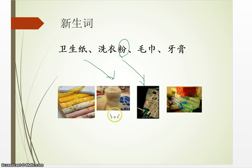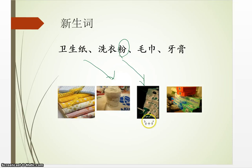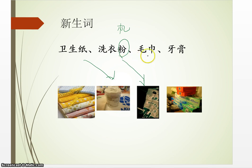These are several names for items that you use daily. For example, 卫生纸 — we learned 卫生间 before, so the paper you use in the bathroom is 卫生纸 (toilet paper). 洗衣粉 — we learned 洗衣机 before. 粉 here means powder, not the pink color, so 洗衣粉 is detergent. 毛巾 — we just learned 毛衣, and 巾 is towel, so 毛巾 means towel.